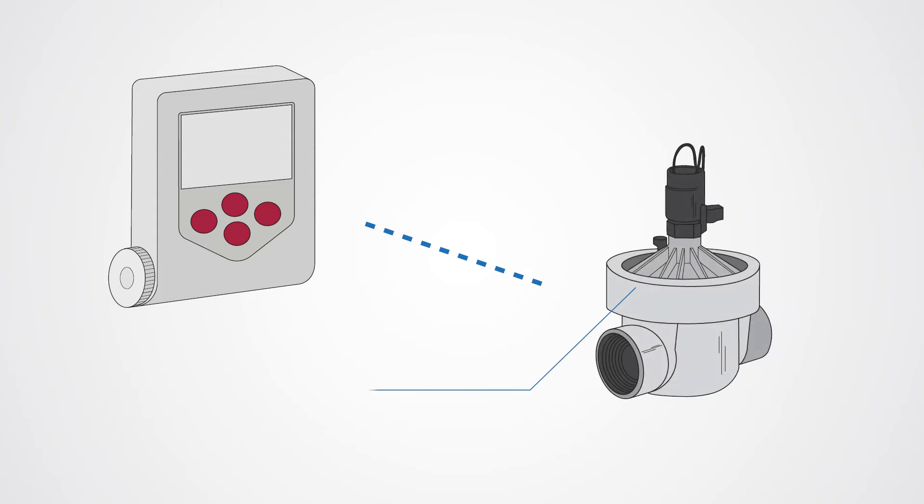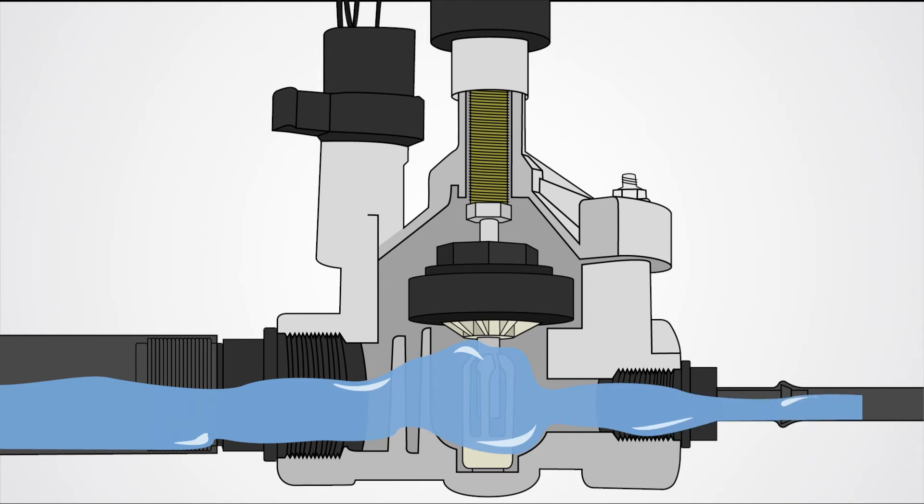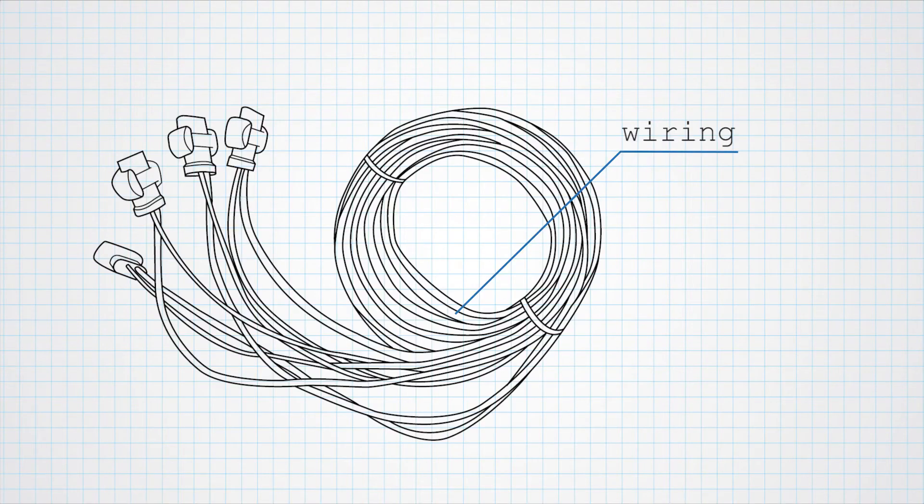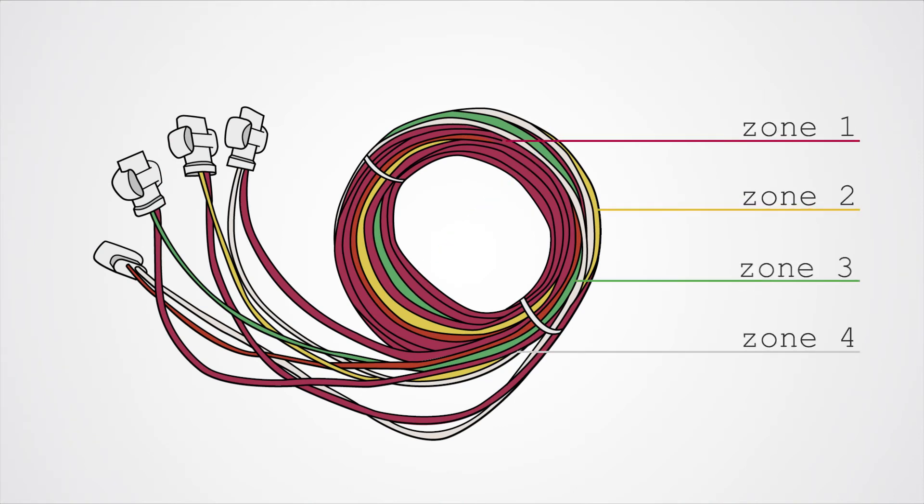The controller talks to the solenoid valves. They act like doors to let the water flow into the system. To connect the controller to the valves, you may need irrigation cable. It comes in different colours for programming multiple zones.